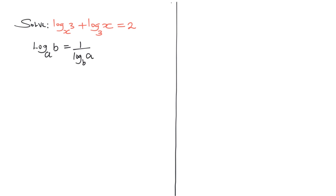That simply means, in our case, that log to the base of x of 3 is the same as 1 over log to the base of 3 of x. So we want to write the first part of the equation as 1 over log to the base of 3 of x. The second part will be maintained, so we'll have log to the base of 3 of x, and all that equals 2.